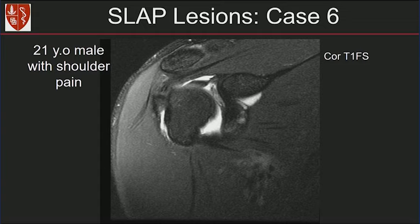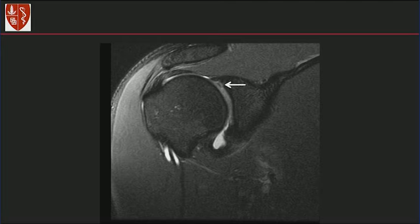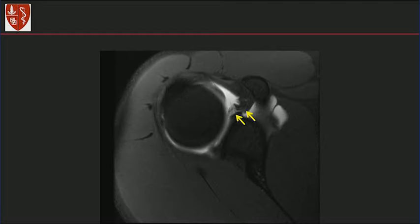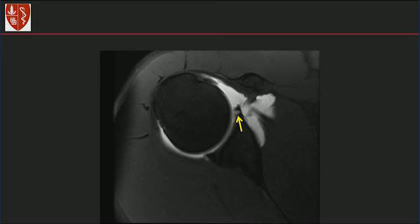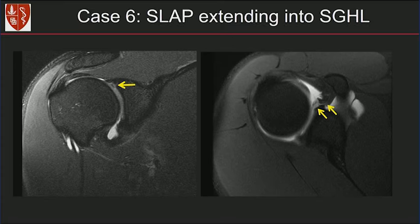This is a 21-year-old male with shoulder pain. An MR arthrogram was performed. Running through the coronal images from anterior to posterior, you see a little fragment of labrum, similar to the earlier case. On the axial MR arthrogram images, notice irregularity and high signal going to the SGHL — the superior glenohumeral ligament. There's the labral tear. These are subtle findings, but this is probably a SLAP lesion extending into the superior glenohumeral ligament.